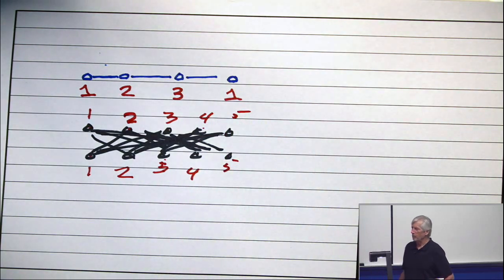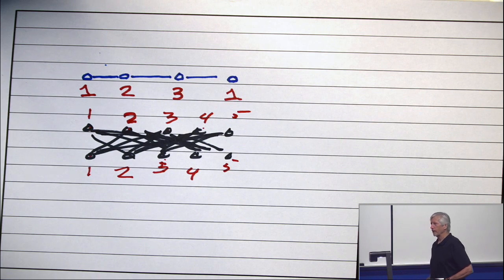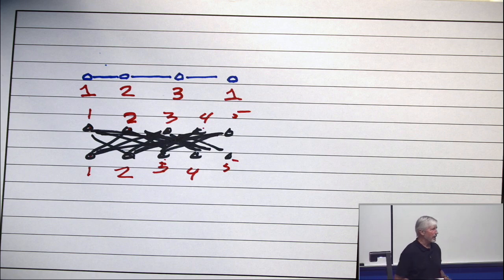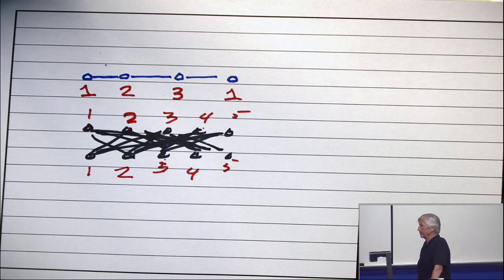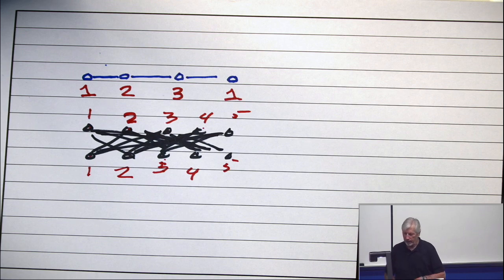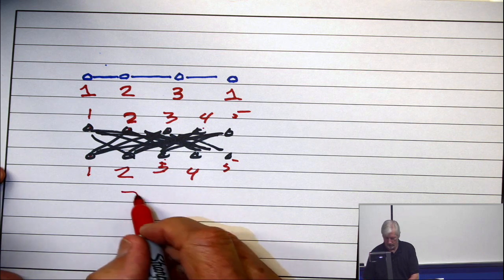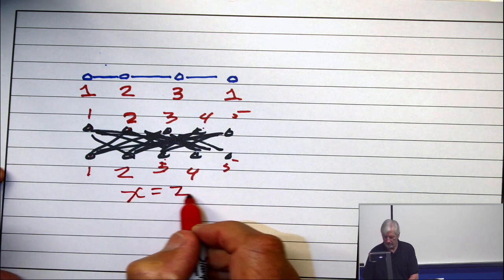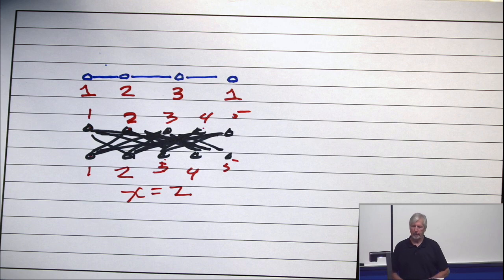So the UGA student applying first fit is going to get a legal coloring but it's going to be a really bad one. The Georgia Tech student walks in and says you dim wit, maybe even says something worse than that, and says actually the chromatic number is 2, it's not 5. Alright so first fit can be very very bad in some situations.